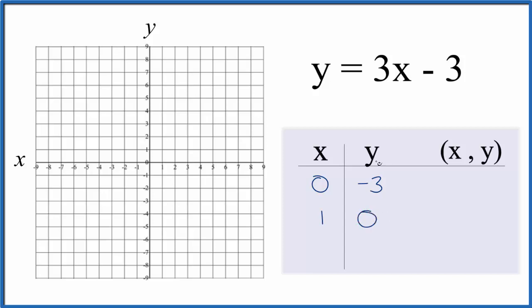Let's use -1. 3 times -1 is -3, minus 3 we get -6. So these are the points that we'll graph here for the linear equation y = 3x - 3.